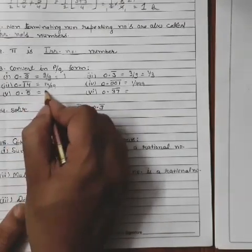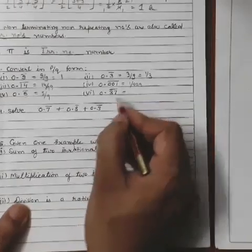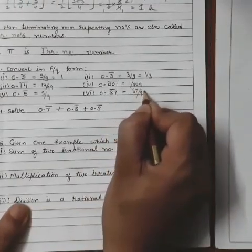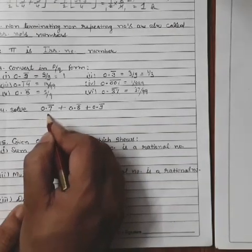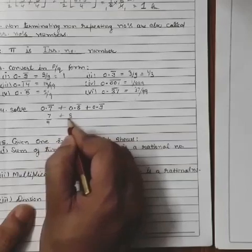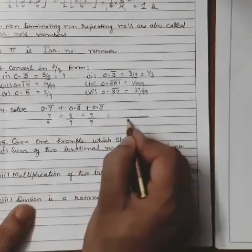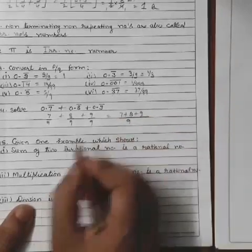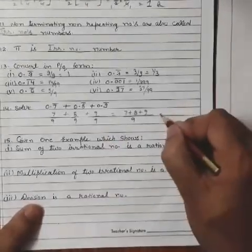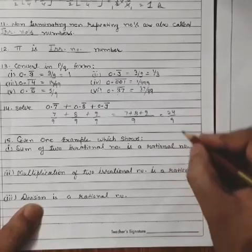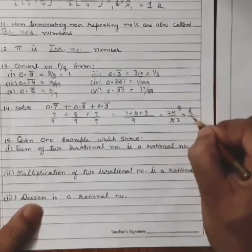For 0.7 bar upon 9, adding: 0.7 bar is 7 upon 9, 8 upon 9, 9 upon 9. The LCM is 9. Adding: 7 plus 8 is 15, plus 9 is 24. This gives 24 upon 9. Simplifying: 3 eights are 24, 3 threes are 9. So 8 upon 3 is your answer.